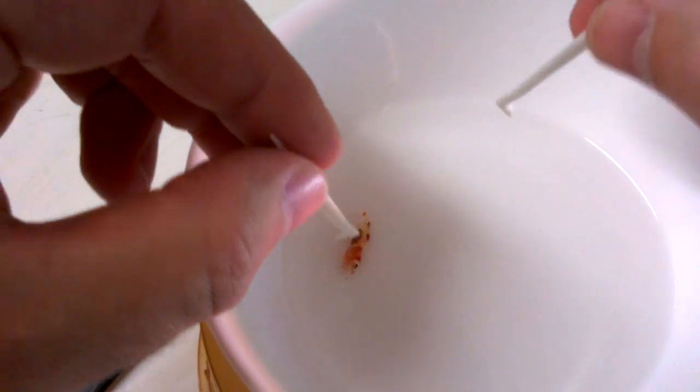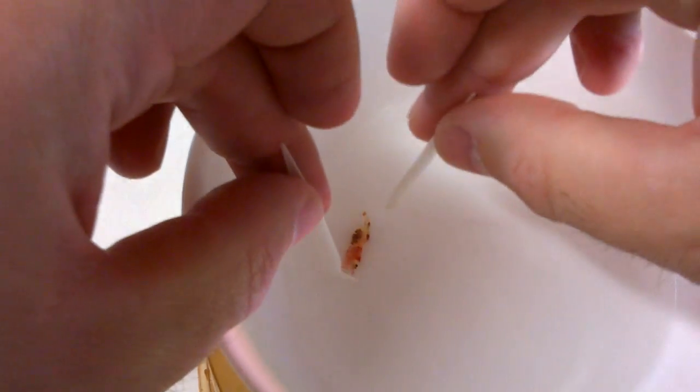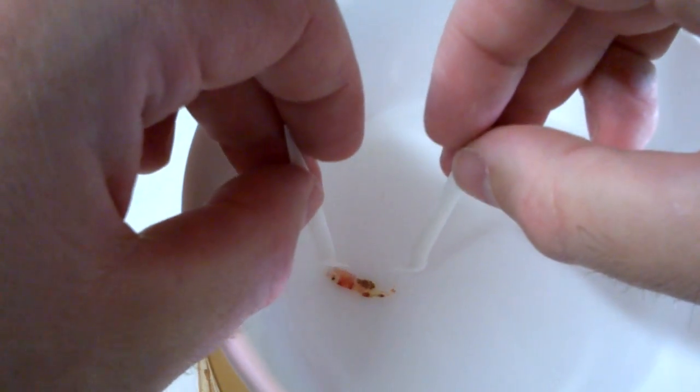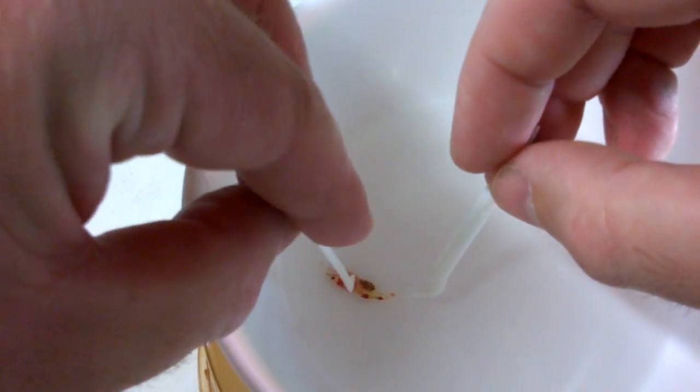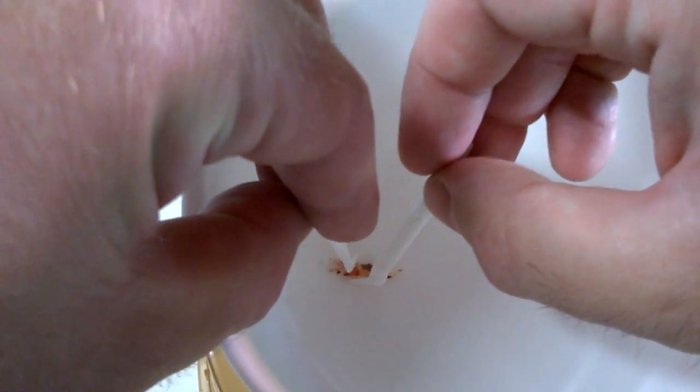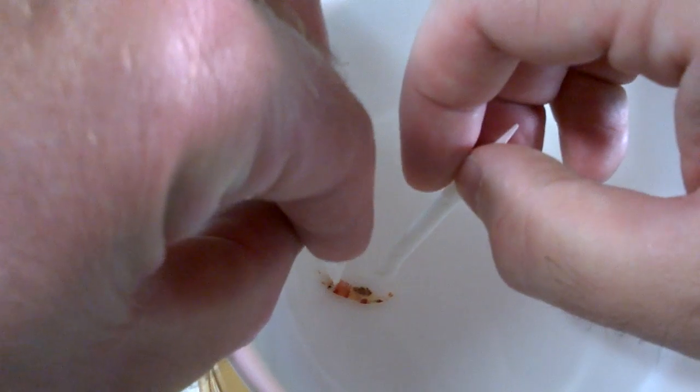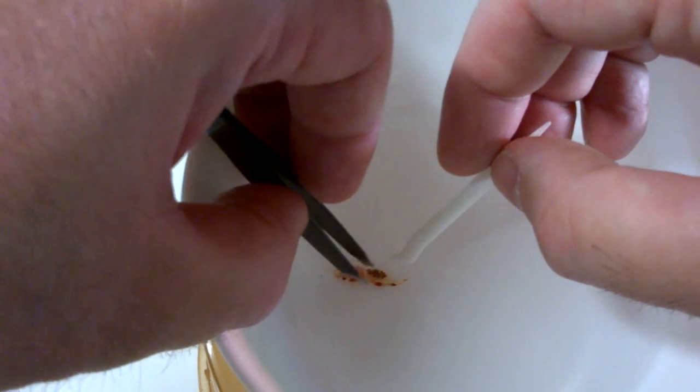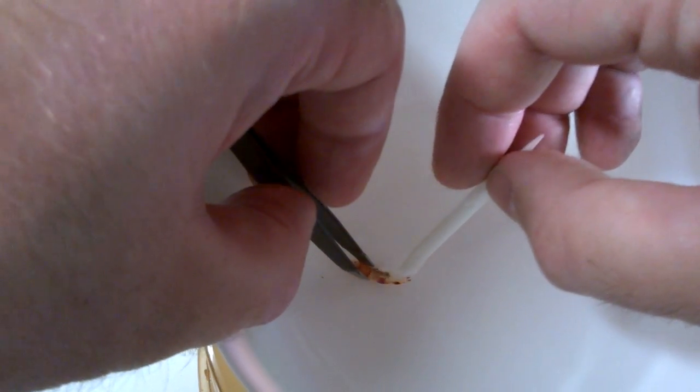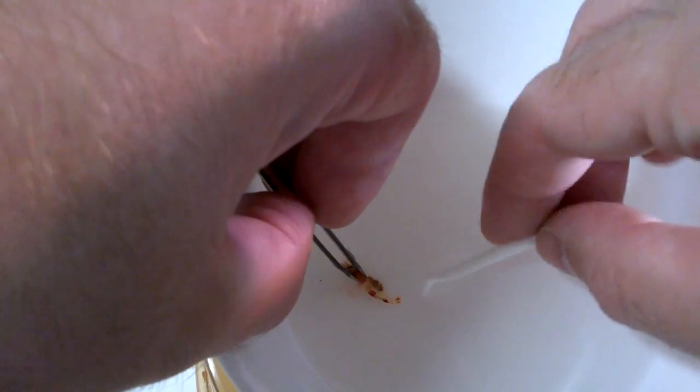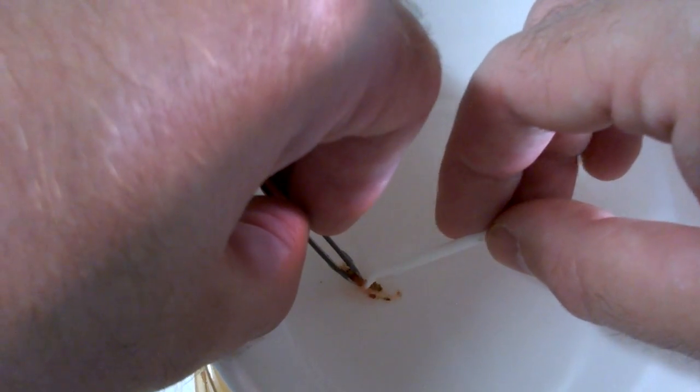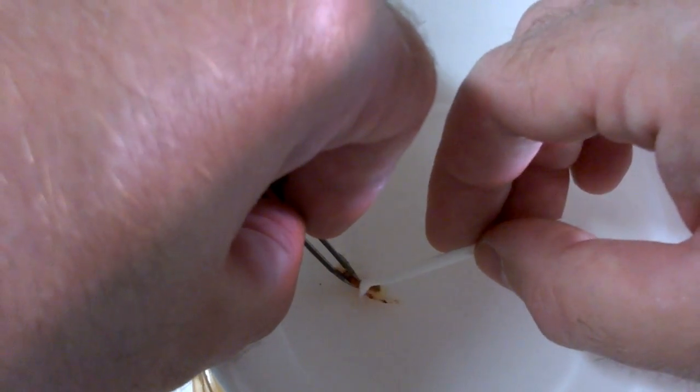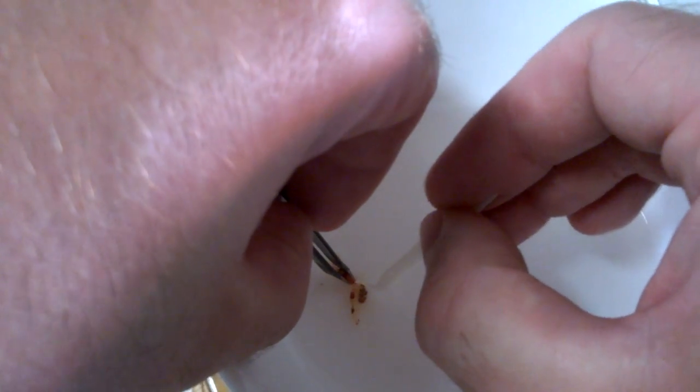Alright, so the first thing you want to do is we're basically going to have to try and separate the eggs from the body. It's a little bit difficult for me to do because I have the camera right in the way here. We use the tweezers just to grab the head of the shrimp. Maybe I'll take the head off first actually, that may be easier. There you go, the head's off.